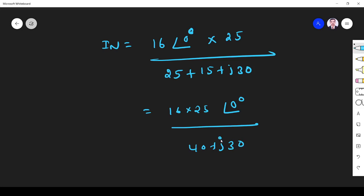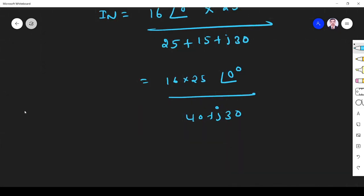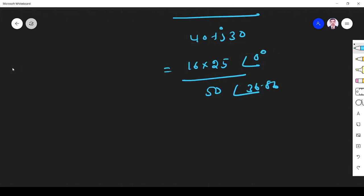If you simplify, 16 into 25 divided by, this is 40 plus j30 is 50∠36.86. So I Norton is given by minus 36.86 in polar format.